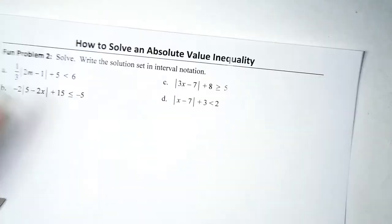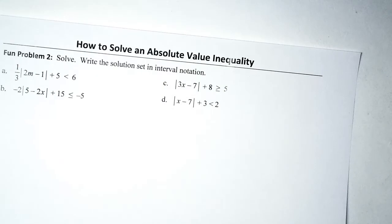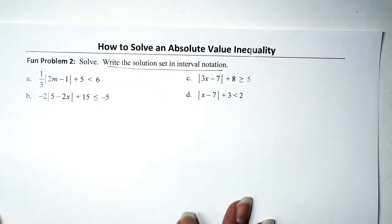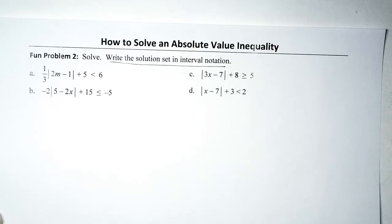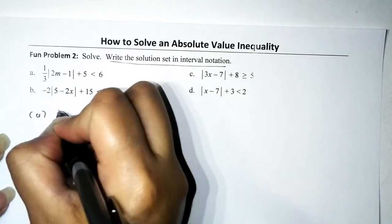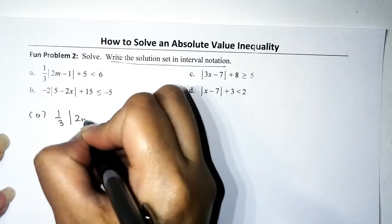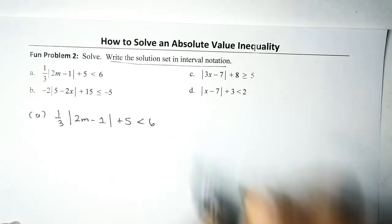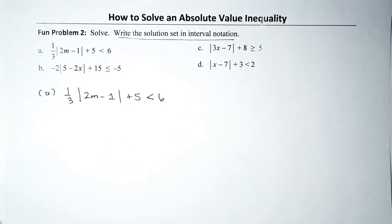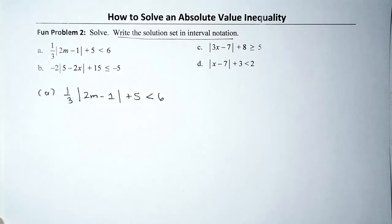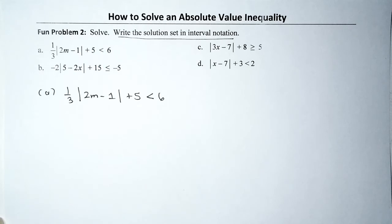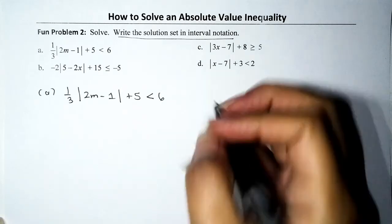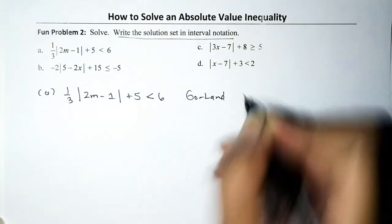Now let's work on actual test problems — four problems total. The directions say to solve and write the solution in interval notation. First problem: one-third times the absolute value of (2m − 1), increased by five, is less than six. We have an absolute value inequality, so we're going to GORLAND it — but first we need to isolate the absolute value.